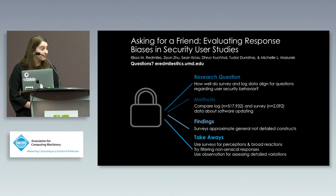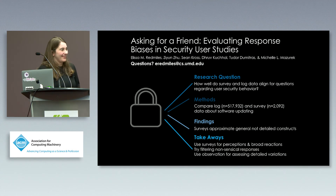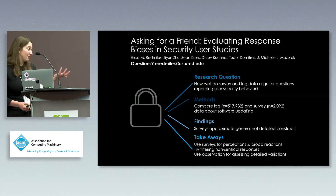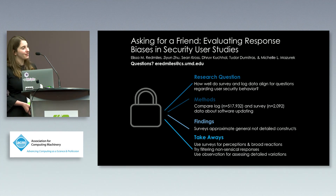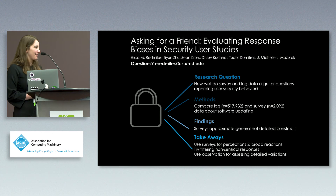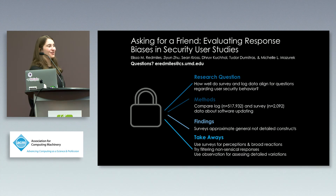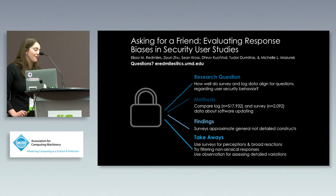Q: Social desirability bias can come up in two ways — answering what they think you want to hear, versus genuinely believing they're better than they really are. Did you try to disentangle these effects? A: No, but it's a great area for future work. There is survey literature showing that presenting a survey as coming from a university versus a company — even on the same subject — produces different responses, so people may have thought 'this is a school thing and I should answer correctly.' Given that respondents wanted their friends to do even better than themselves, it's probably at least partly that they genuinely believe they're better than they are.